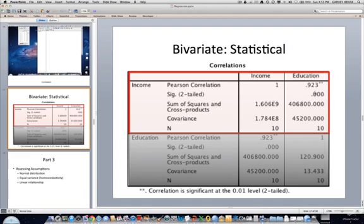And here we see that, in fact, they are significantly related. This 0.000 is less than 0.05. Therefore, we can conclude that education and income are significantly related. The next section is part three, where we're going to cover assessing the assumptions.